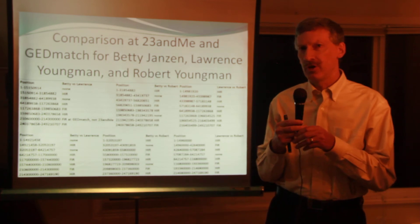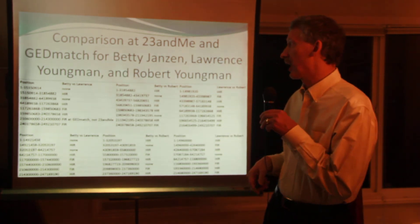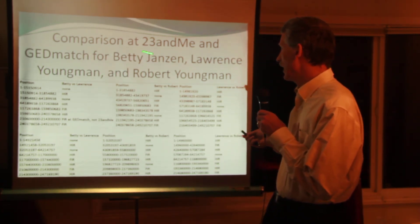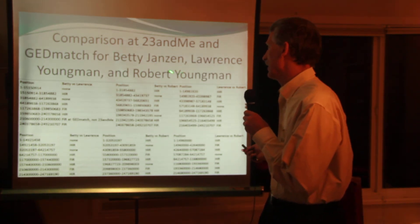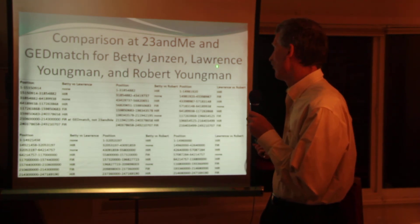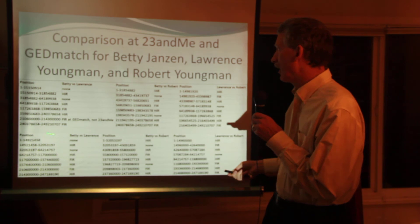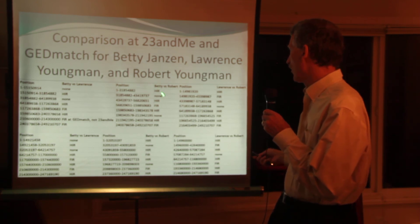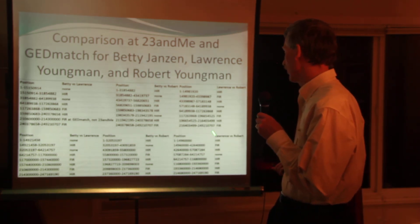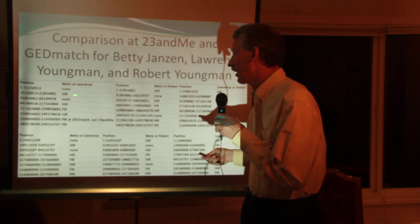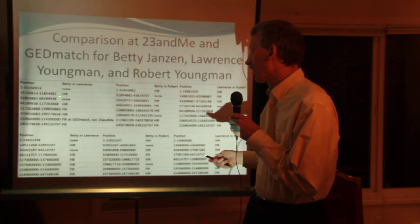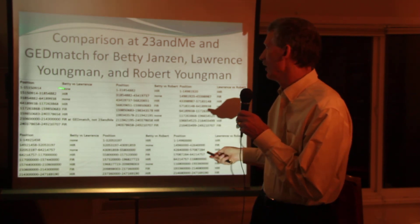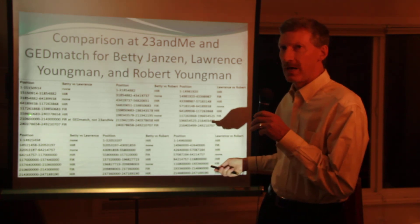What I'd like to do now is introduce some of the first initial elements of doing visual phasing. What you first do is run a comparison either at a company like 23andMe or at GEDmatch. In this particular case, I got the matching segment data for my mother, her brother Lawrence, and also for Robert. Here I have the comparisons between my mother Betty and Lawrence, the comparison between Betty and Robert, and the comparison between Lawrence and Robert. For each of these sections, the DNA is either fully identical — FIR — or it's half identical, and in some cases there's no shared DNA whatsoever. We use this as the basis for chromosome mapping.